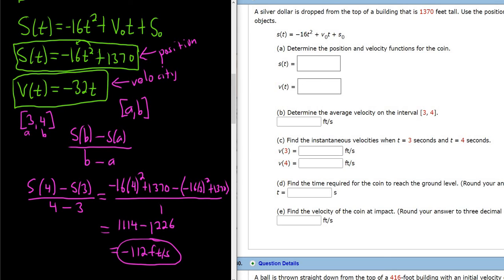Now it wants the instantaneous velocities when t equals 3 and t equals 4. So basically, they just want you to plug in the numbers into the velocity function. So let me just switch colors. So that'll be V(3) is simply negative 32 times 3, which is 96. So this is negative 96. And again, the units are feet per second. I won't bother to write them because they're in the homework. And then V(4) is negative 32 times 4. And 32 times 4 is 128. So this will be negative 128. Okay, I'm feeling bad. I'm going to go ahead. I'll write them in. Feet per second. There we go. It is important.